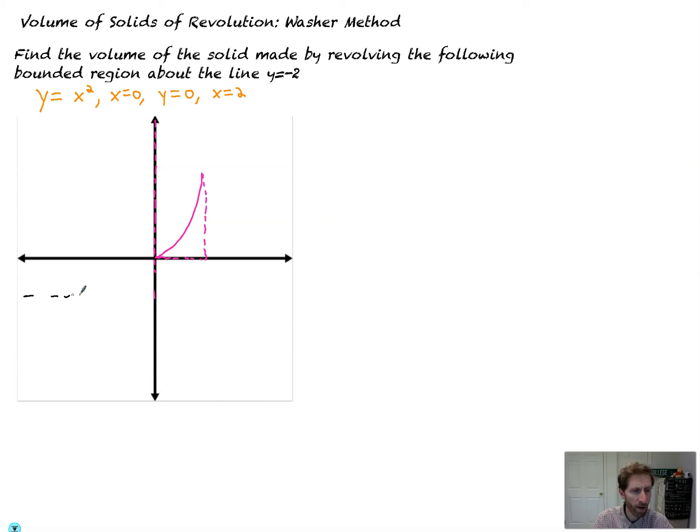And we're going to revolve about y equals negative two, which is way down here. Now, if you notice, up to this point, you've been revolving things directly about the x or y axis or lines that bound that region. So if we now revolve this thing about y equals negative two, there's all of this gap right here. So we end up with an image that kind of looks like this, and you end up with this hole right here, like right in the middle of the solid.